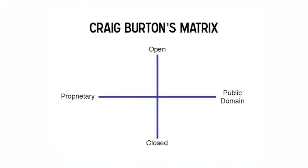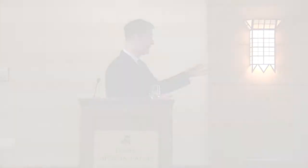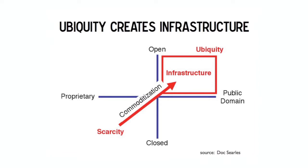We talked about standards, proprietary software, and patents — the concept of proprietary privately-owned information versus open standards. Craig Burton, a genius and legend in the software world, makes a simple grid with two axes: open and closed, and proprietary and public domain. On one side are your patents, on the other side are your standards. His point is that ubiquity creates infrastructure. There's a terrific article on this by Doc Searles, who writes brilliantly about open source.